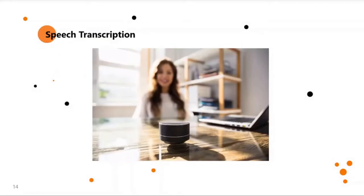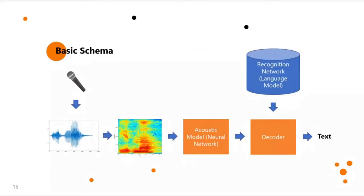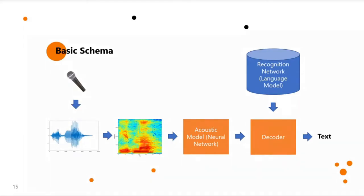Now I will tell you about speech transcription. We take audio and transcribe it to text, which is then used for analytics. The system again starts with a waveform, converts it to a spectrogram, and then a neural network estimates probabilities of short acoustic units — for example, phonemes. Then a decoder uses language models to concatenate these short units into sentences, and the sentence with the best probability wins.